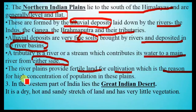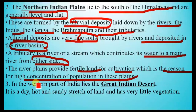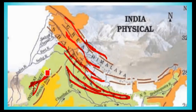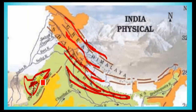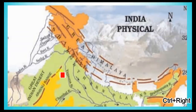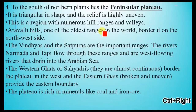The river plains provide fertile land for cultivation, which is the reason for the high concentration of population in these plains. In the western part of India lies the Great Indian Desert — a hot, dry, and fairly large arid area with very little vegetation.